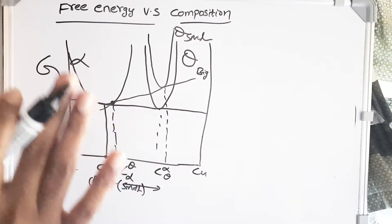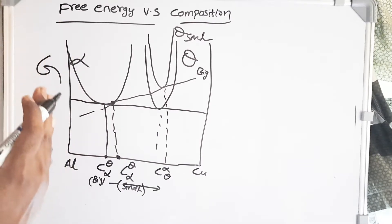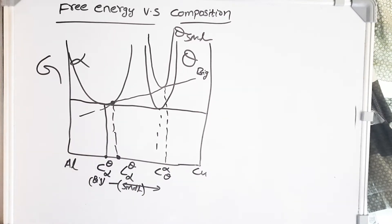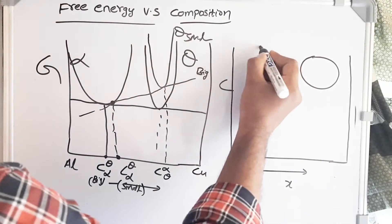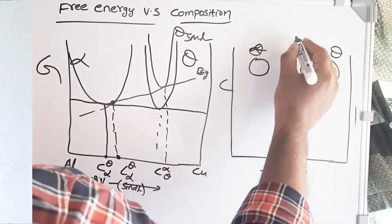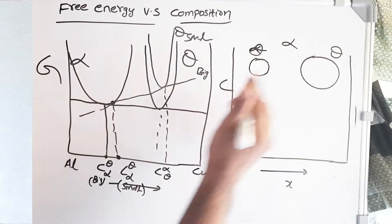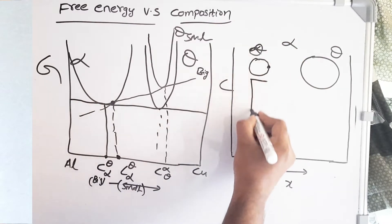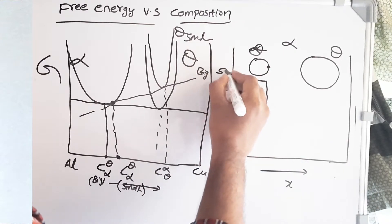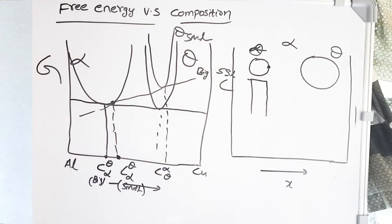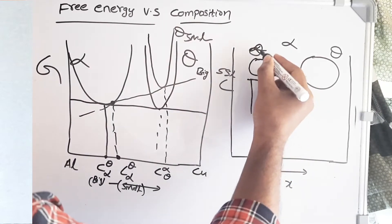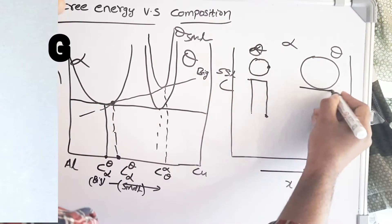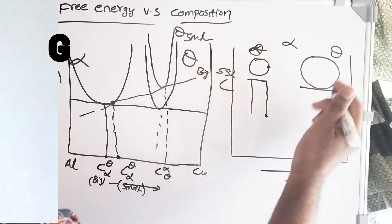We can clearly see that the concentration of alpha in equilibrium with theta smaller is greater than that of alpha in equilibrium with theta bigger. From the concentration profile, this peak is because the precipitate contains 55% copper, whereas the matrix is about 4–4.5% copper. The composition of theta in equilibrium with alpha at the interface is this value. Even if the precipitate is smaller or bigger, its composition is always 55% copper.